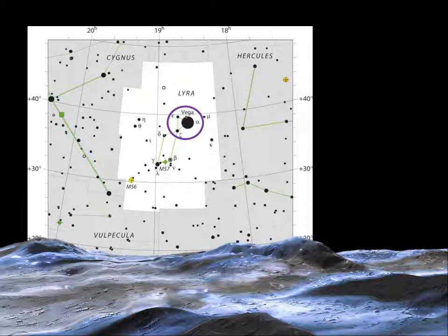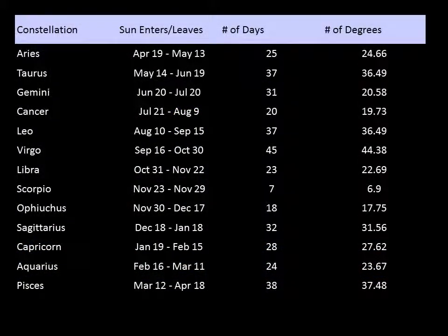Precession also has consequences for astrology. The zodiac constellations were defined several thousand years ago by the Babylonians. Because of precession, the sky has shifted. The sun is not in the same constellations on the same dates as it was in the time of the Babylonians. For example, the sun used to be in the constellation of Aries on the vernal equinox. Now it's in Pisces. This means the astrological signs are all off.